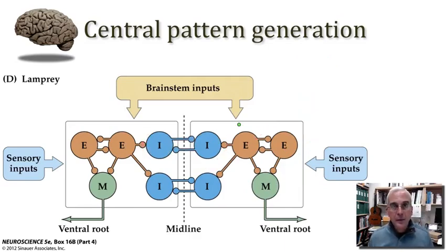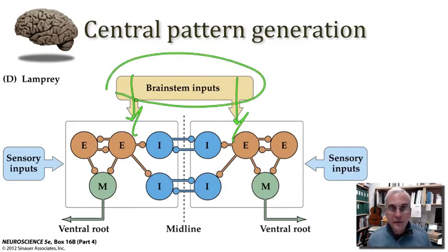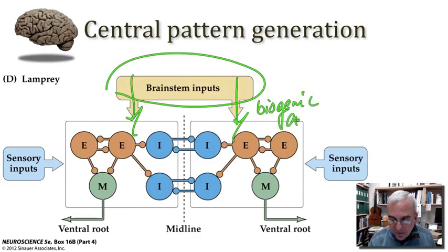Another common element that we see in central pattern generation is modulation from descending inputs. For vertebrates, this comes in the form of descending inputs from the brainstem. This allows the expression of pacemaker activity to actually be initiated by these descending inputs. Often these inputs release biogenic amine neurotransmitters, and these biogenic amines can often set the rhythm in motion, or they can modulate the rate of the rhythm.